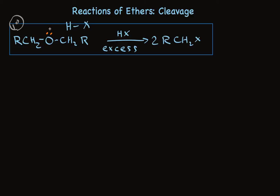We can follow that with arrow pushing. A pair of electrons forms a bond with hydrogen; this bond breaks to make halide. So this is an equilibrium reaction that makes a protonated ether. It turns a very poor leaving group — alkoxide — into a good leaving group, alcohol.